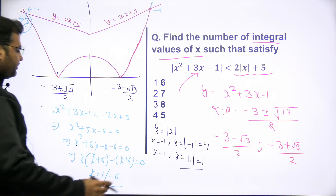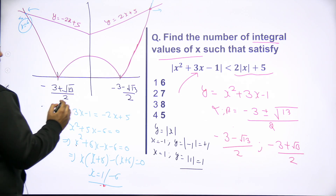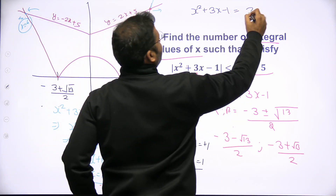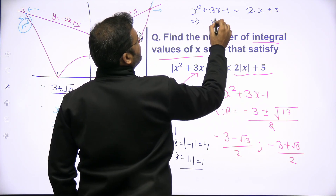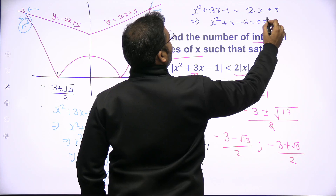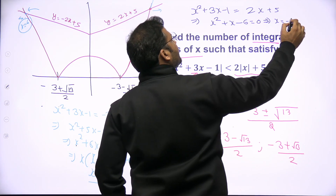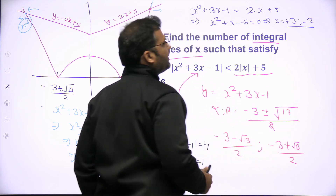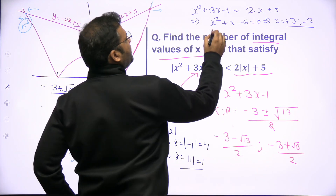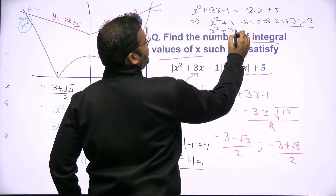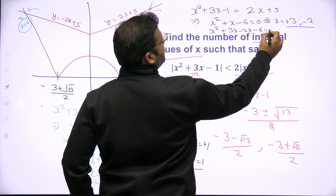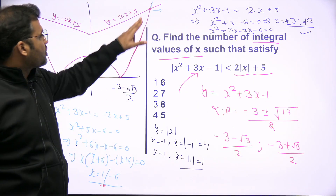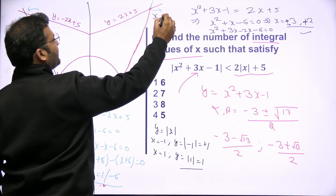For the right-hand side intersection, on the positive x side: x squared plus 3x minus 1 equals 2x plus 5, giving x squared plus x minus 6 equals 0. Factorizing: x squared plus 3x minus 2x minus 6 equals 0, giving roots minus 3 and plus 2. Since we are on the positive side, we take the positive root, so x equals plus 2 is the right-hand side intersection.